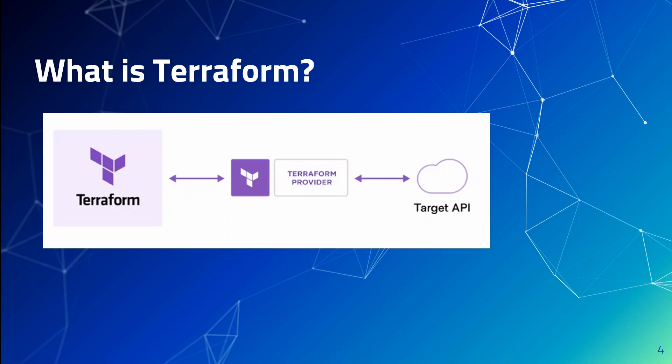And then when you apply Terraform, it picks that code and creates that EC2 instance. In the future, if you make any change to that code — like changing the instance type — and apply Terraform again, Terraform will make sure that your desired state gets applied to your infrastructure. This is what Terraform is.